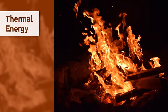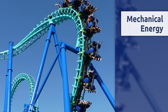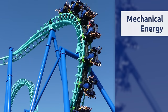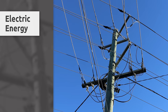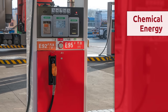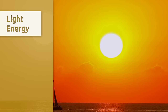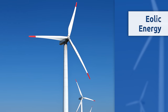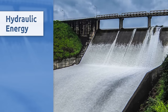There are several types of energy. Thermal energy, also called heat energy, is transferred with heat. Mechanical energy is created by two objects owing to their movement. Electric energy is carried by electric currents. Chemical energy is found in substances like food or fuel. Light energy is present in light. Eolic energy comes from the wind. Hydraulic energy is obtained thanks to the flow of water.